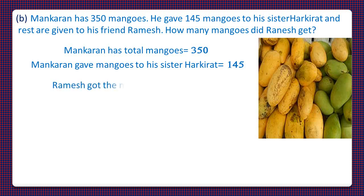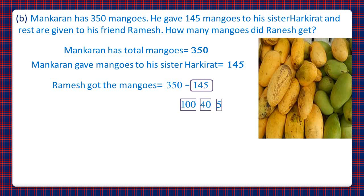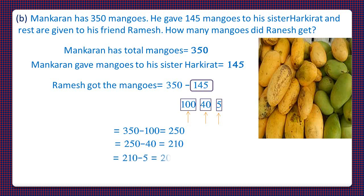Ramesh got the mangoes, which is equal to 350 minus 145. To solve, let's split 145 into 100, 40, and 5. First, we'll subtract 100 from 350 and get 250. Now we'll subtract 40 from 250 and get 210. Finally, we'll subtract 5 from 210 and get the answer 205. So Ramesh got 205 mangoes.